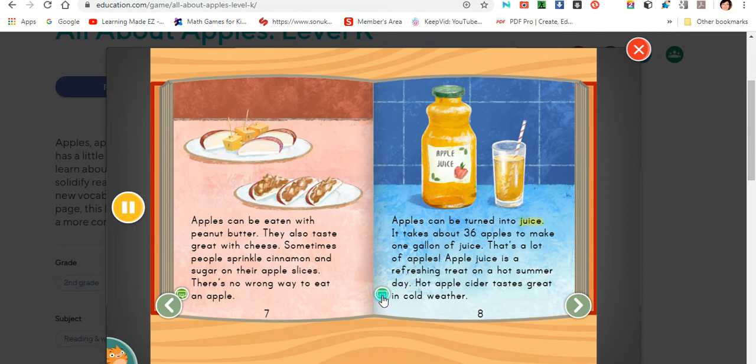Apples can be turned into juice. It takes about 36 apples to make one gallon of juice. That's a lot of apples. Apple juice is a refreshing treat on a hot summer day. Hot apple cider tastes great in cold weather.